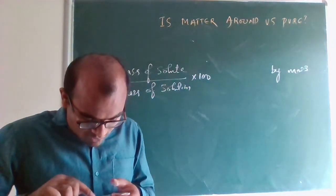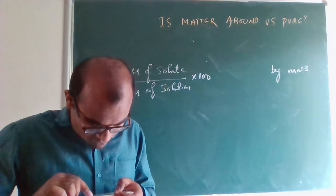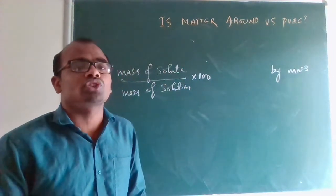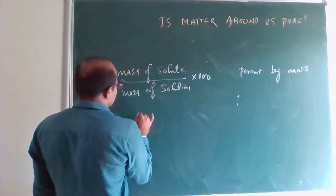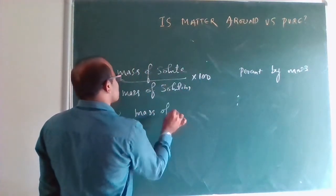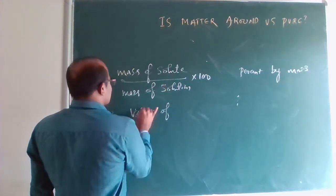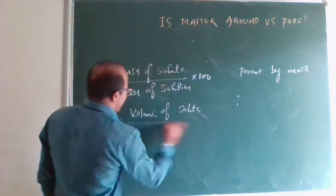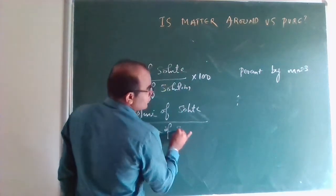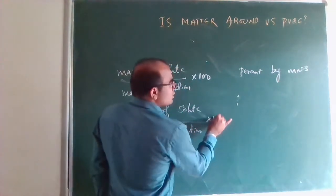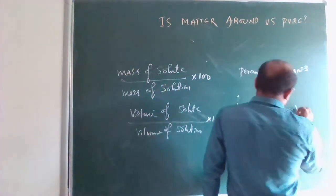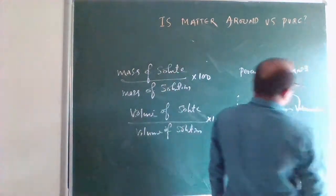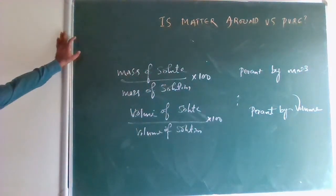Next comes percent by volume: volume of solute to the volume of solution into 100. So percentage by volume = volume of solute divided by volume of solution, into 100. When we say kilograms we are referring to mass, and when we say liters we are referring to volume. For example, 5 kg of oil is in mass; 5 liters is in volume.